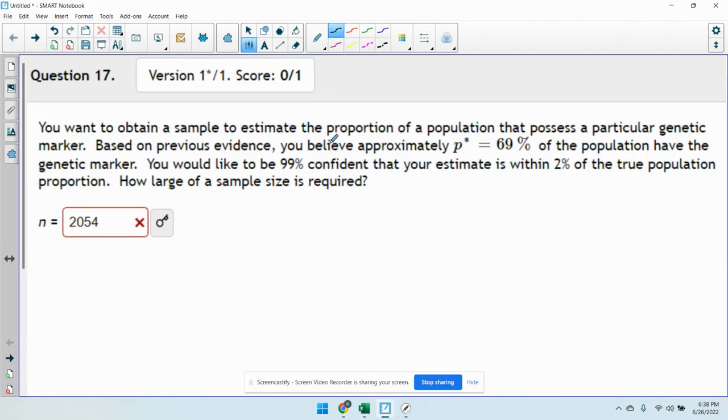Okay, so real quick, it just says find a 99% confident. You want to be 99% confident that your estimate will be within 0.2%. So the first thing you have to do is find that Z value that cuts off the middle 99%.